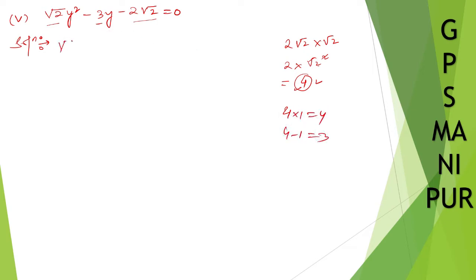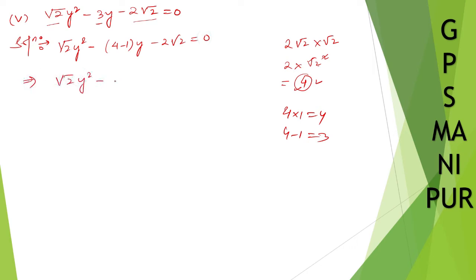So 3 is here, so write down: root 2 y squared minus 4 minus 1 y minus 2 root 2 equal to 0. Now, root 2 y squared minus 4y plus minus y minus 2 root 2 equal to 0. Now, from these two, you can take y common.